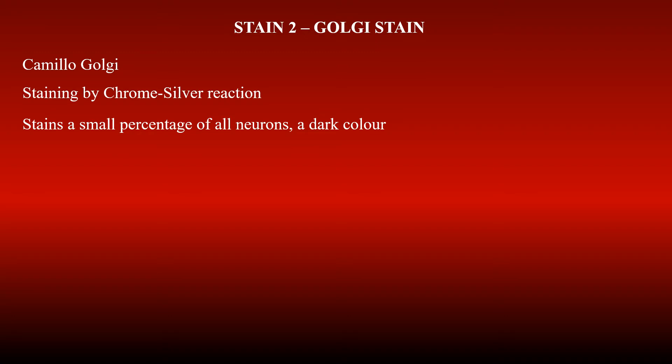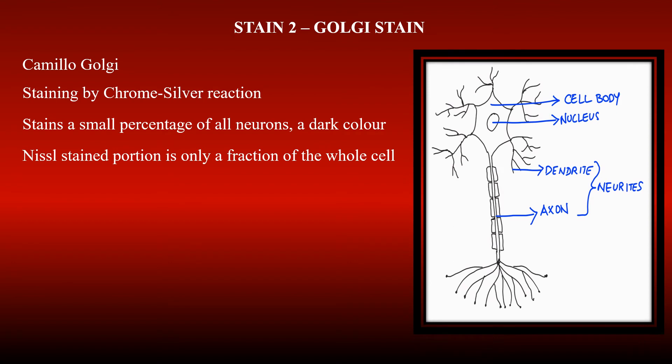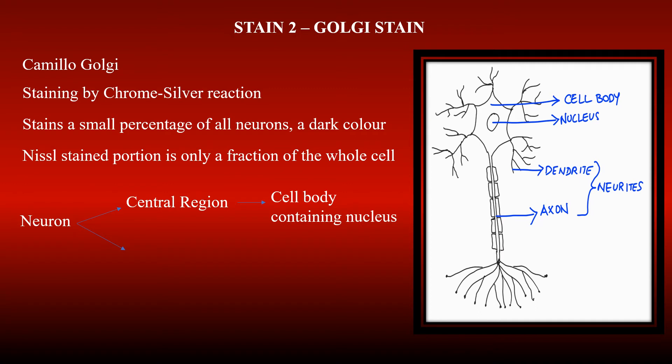In 1873, another scientist named Golgi used a stain called the Golgi stain to figure out the structure of neurons and the nervous system. He used potassium dichromate and silver nitrate, which had a chrome-silver reaction. This stained a small percentage of all neurons in a dark color and showed that the Nissl-stained portion is only a fraction of the whole cell. It was also clear that a neuron has two regions: a central region — the cell body — that contains the nucleus, and projections of thin tubes from the central region called neurites.